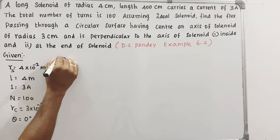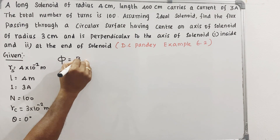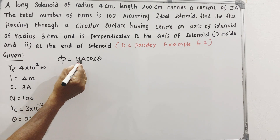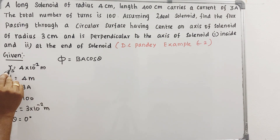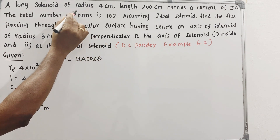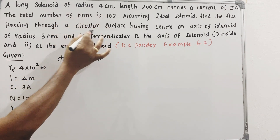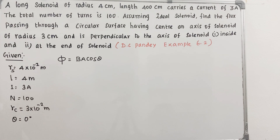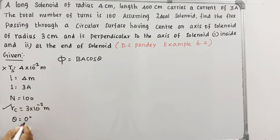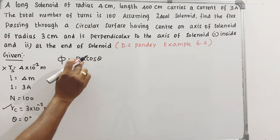Let's apply the formula: phi = B·A·cosθ. The area is pi·r², where r = 3 cm = 3 × 10⁻² m. So A = pi·r². Since theta = 0, cos θ = 1.